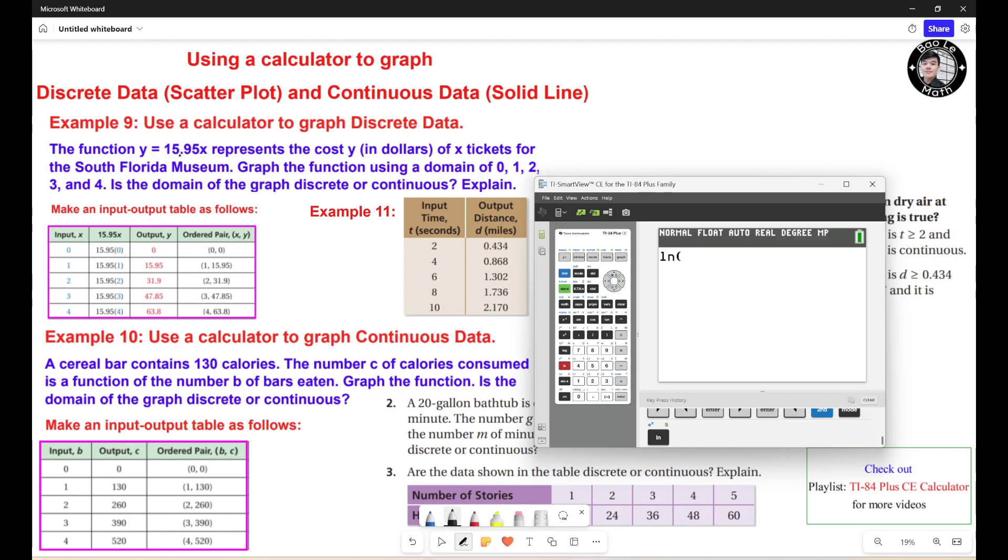So we have the function right here. We need to create a table. We're gonna put the value of X: it could be 0, 1, 2, 3, 4, which is the input, and then the output, it could be 15.95 times X. So we're gonna substitute every single value of X into this function. We're gonna get the corresponding output values: 0, 15.95, 31.9, 47.85, and 63.8.